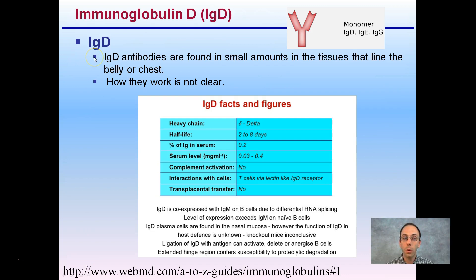IgD is an interesting one. These antibodies are found in small amounts in the tissues that line the belly and chest. However, exactly how they work is not 100% clear. We acknowledge their presence and have a basic understanding, but the specifics of how they function are not yet fully known — a reminder that scientists continue to research things we know exist but need to understand better.